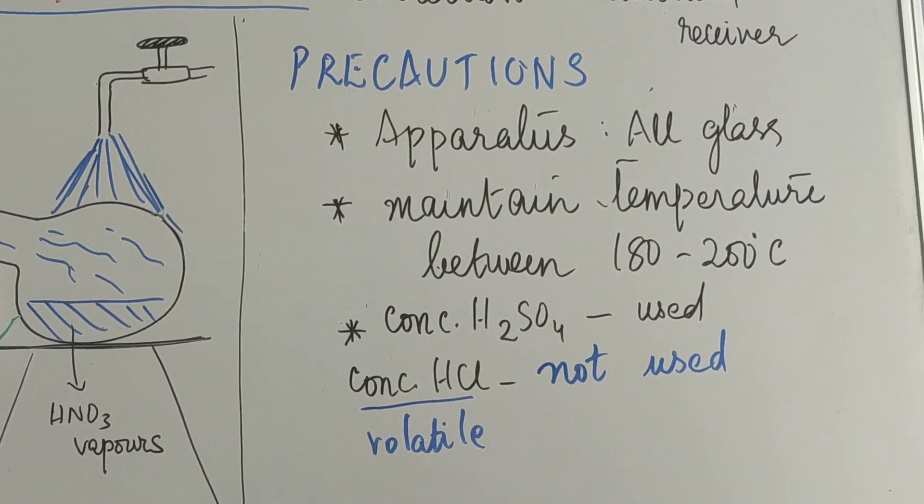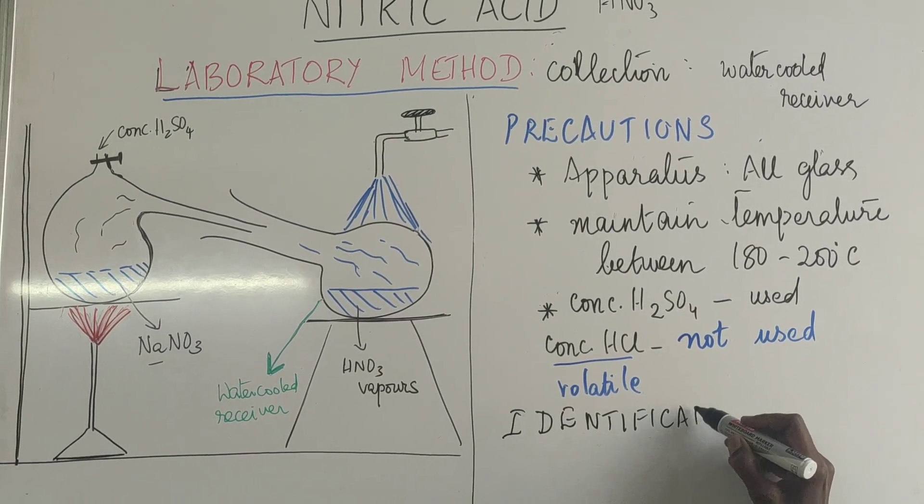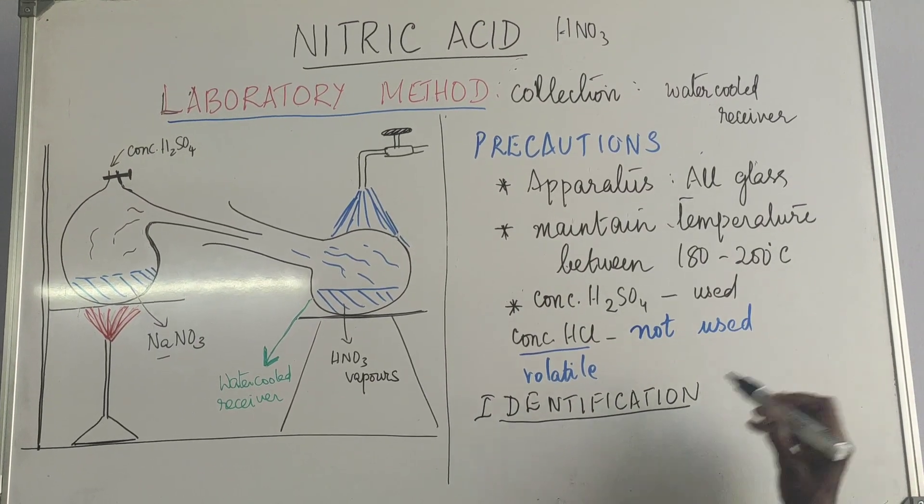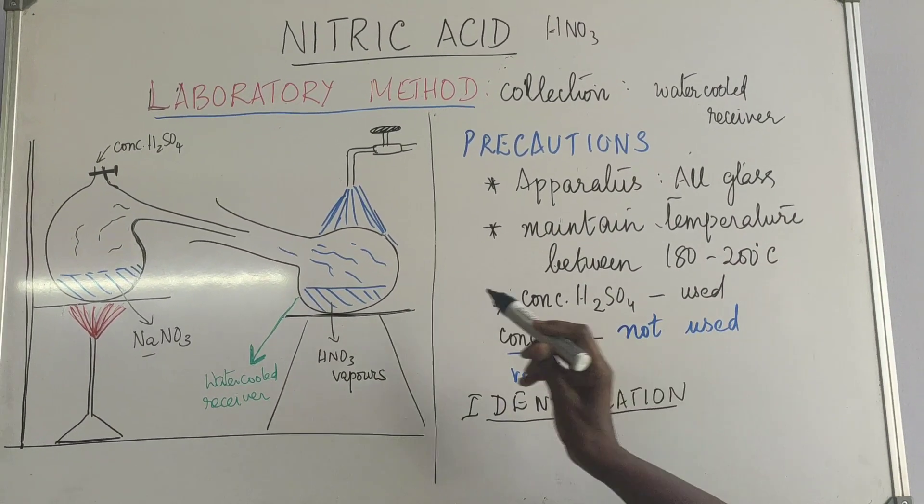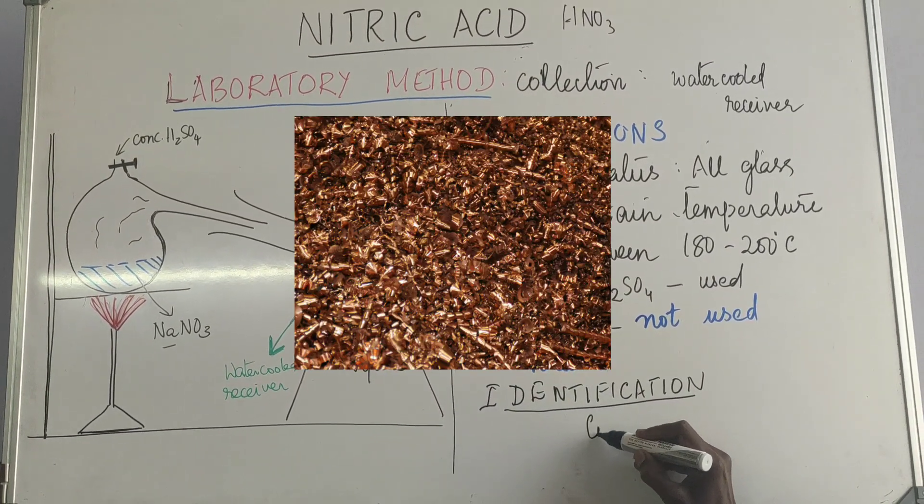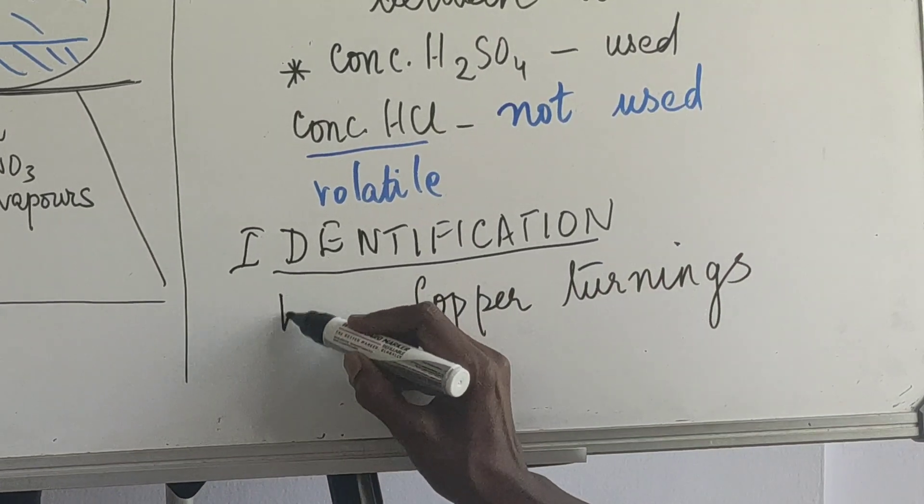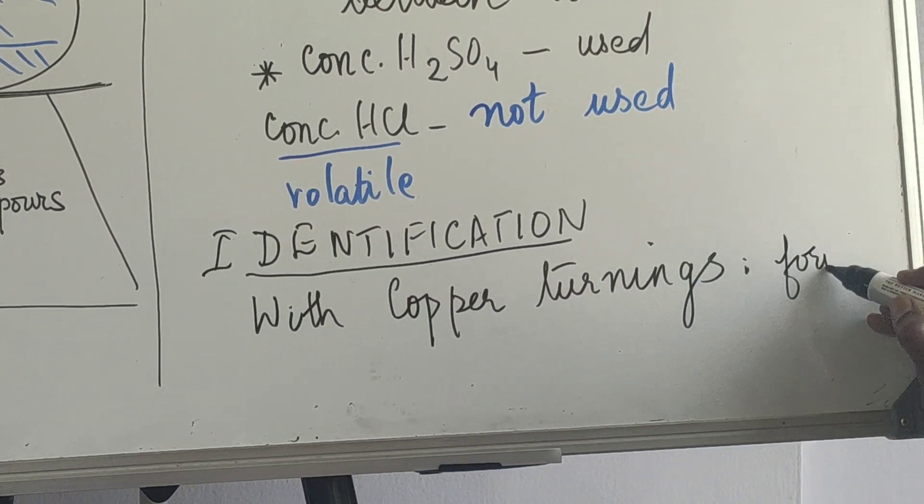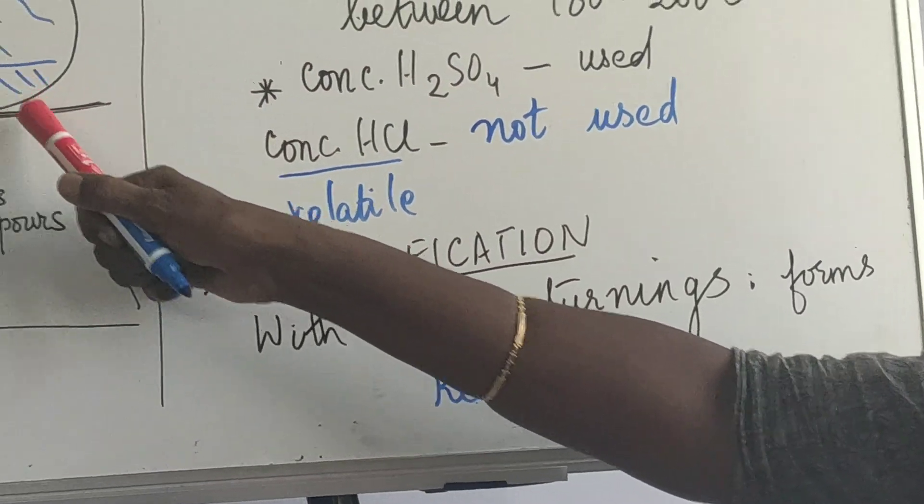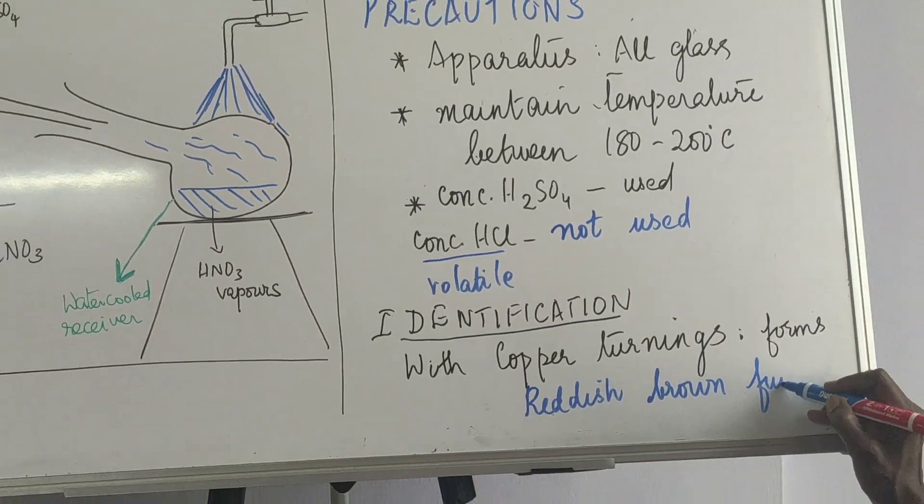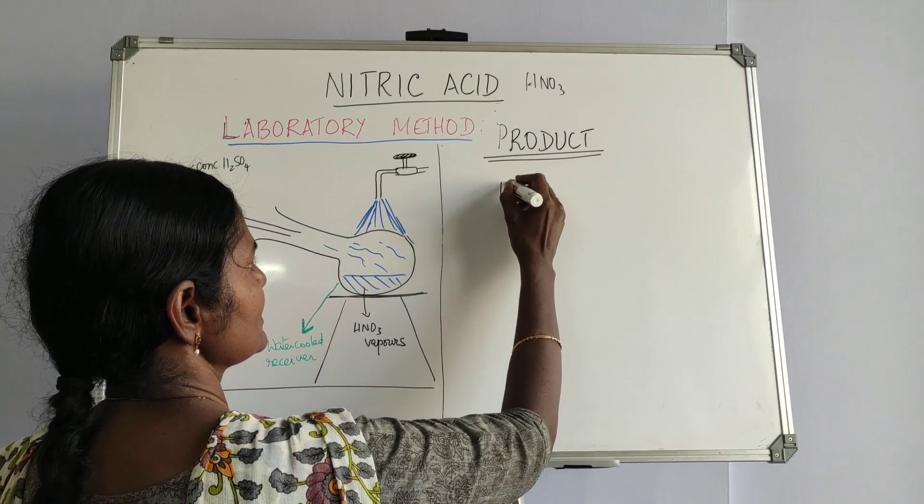Now the last one in this is identification. How do we know that nitric acid has been formed? Nitric acid has the nitrate ion. See NO3 is there. And when these vapors, when this flask is taken out and if it is slightly heated and copper turnings are brought near and added to it, then you will get reddish brown fumes. So with copper turnings forms reddish brown fumes. That shows that the substance or the liquid that is collected here is nitric acid. The product formed is nitric acid.